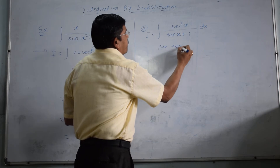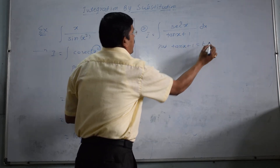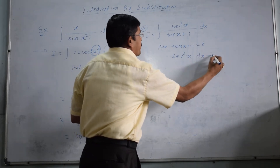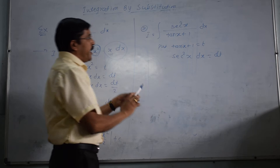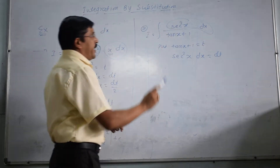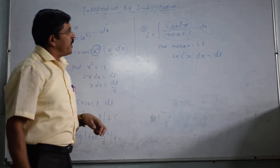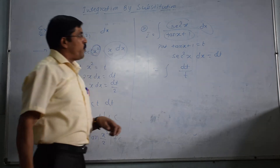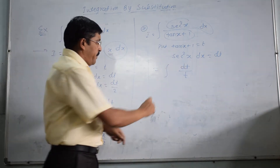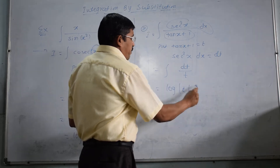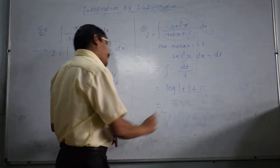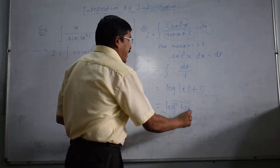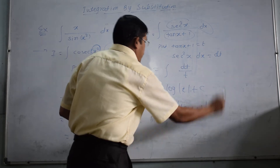To get this derivative, we put tan x + 1 equal to t. So the derivative of tan x is sec²x, and sec²x dx equals dt. It means for sec²x dx we get dt, and for tan x + 1 we have t. We can put dt/t here. By formula, integral of 1/t dt becomes log|t| + c. Now to get the answer, we substitute back the value of t. So we get log|tan x + 1| + c.